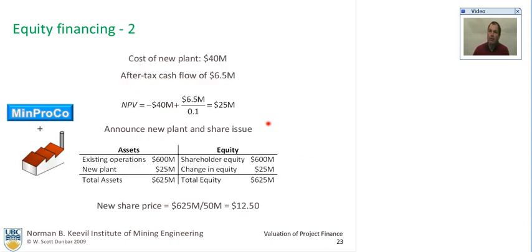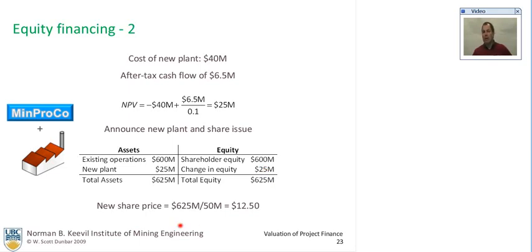The cost of the new plant is $40 million — this could be an add-on to an existing plant. The after-tax cash flow from this add-on is $6.5 million, and the net present value is $25 million. You announce this new plant and the intention to issue shares, so you have this new plant as an intangible asset. Total assets are now $625 million, and the change in equity is $25 million. Assuming the market responds favorably, the new share price will be $12.50.